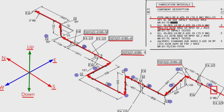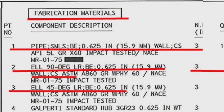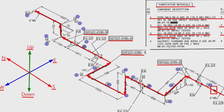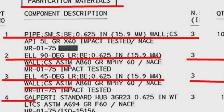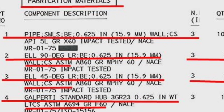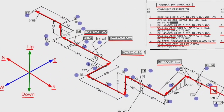Detail number three was used in two places in the pipe drawing. Detail number four was also used in several places in the pipe drawing. Item number four is the Galperd standard hub flange. Now let's look at the 3D model view of this pipeline.